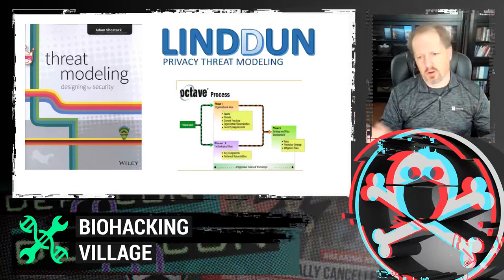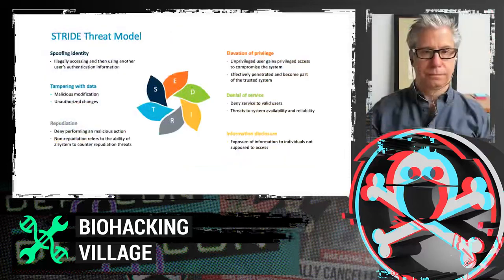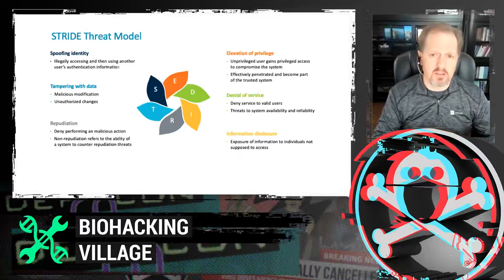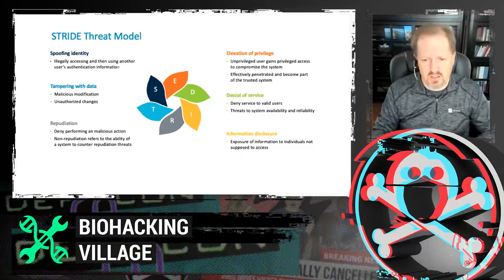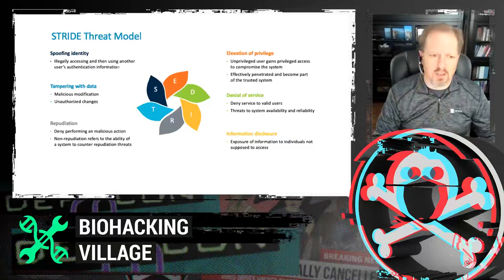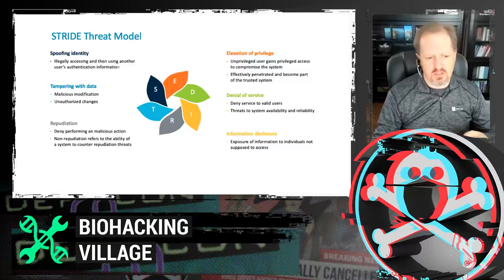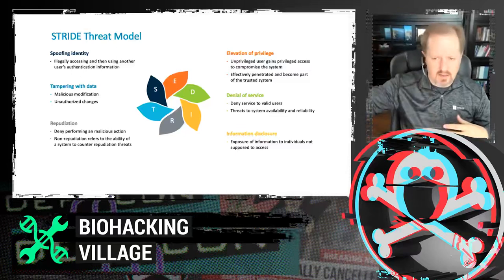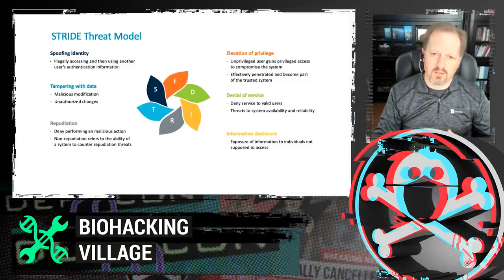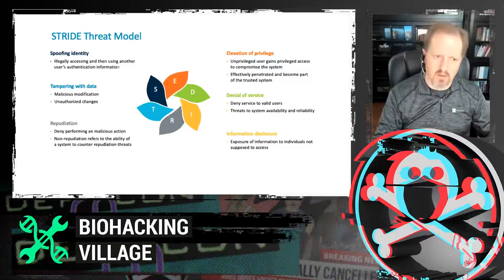Adam's book largely focuses on the STRIDE threat model, which came out of Microsoft. This was a way of getting software engineers to assess the major threats to applications, narrowed down to six areas: Spoofing — illegally accessing an application; Tampering — modifying data; Repudiation — somebody performing an act and we can't figure out who it was; Elevation of Privilege — gaining credentials they shouldn't have; Denial of Service — shutting it down; and Information Disclosure — breaching information, which is what Patrick and I worry about a lot. That's the STRIDE model — please go read about it.